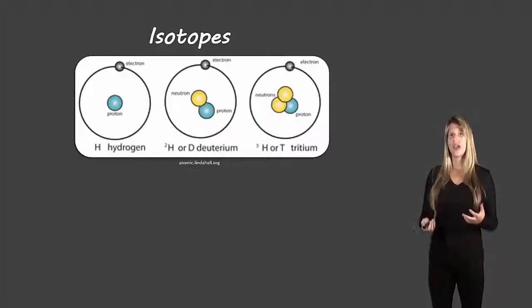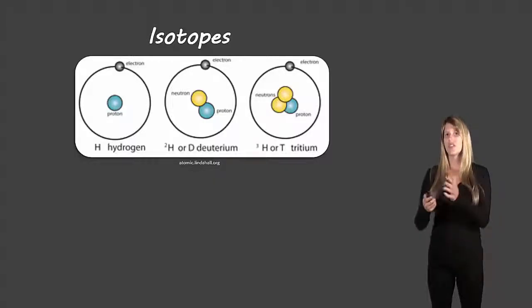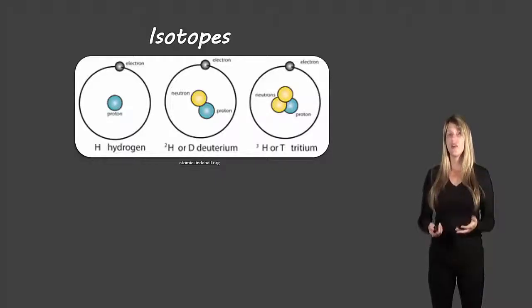Now we'll look at isotopes. Isotopes have to do with the number of neutrons that are inside of an atom. Now we already said the number of protons is specific. So three protons would be lithium, one proton would be hydrogen and so on. Our number of electrons for a neutral atom will be equal to the number of protons. The number of neutrons however can change.